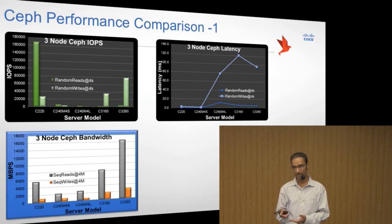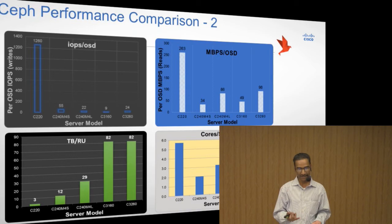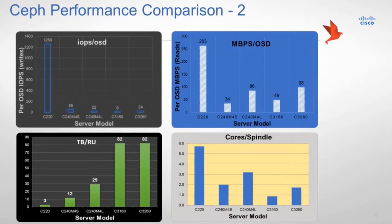The same applies for bandwidth. I have taken three variables here and you can test and plot more. A better way of looking at it is per-OSD figures. IOPS per OSD — I have drawn this as writes; if I had taken reads you would not even see the writes on the graph because reads are much better. So looking at write performance and IOPS, again SSD wins. But if you look at bandwidth, or the terabytes of space per rack unit, then obviously SSD is not the winner. So what this translates to is: if a tenant wants high IOPS and low latency, SSDs are good. But if they are looking for backup, archival, and those types of needs, that is a different category you should go for.